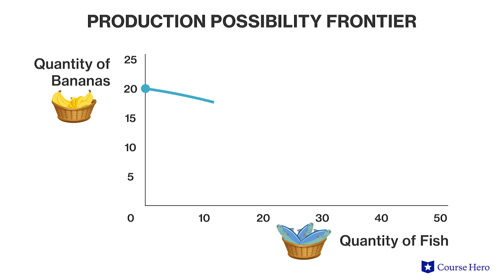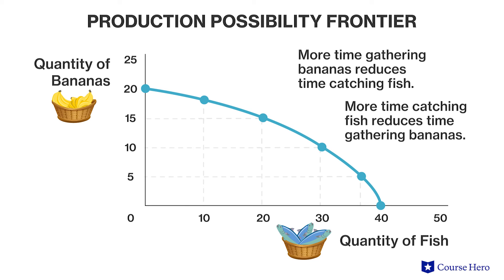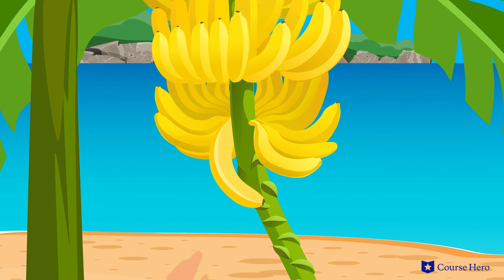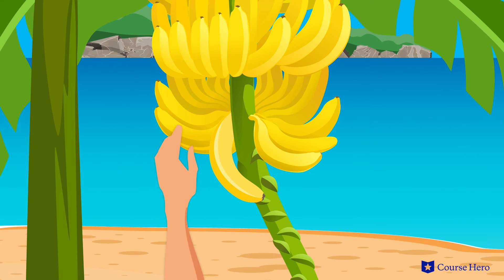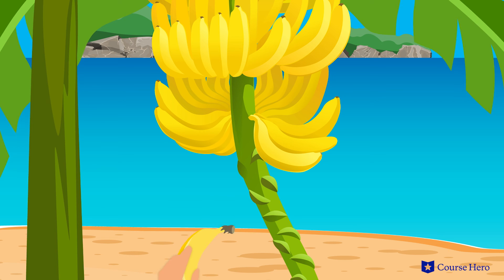So why might Jerry experience increasing opportunity cost? Because Jerry's only resource is time, anything that makes the collection of bananas or the catching of fish more time-intensive will affect his opportunity cost. For example, Jerry may need to climb higher to collect bananas from a tree — it will take more of his time to collect the same number of bananas as before, which takes away from time he can spend catching fish. Alternatively, if he must go further into the ocean to catch fish, he won't be able to spend as much time collecting bananas.